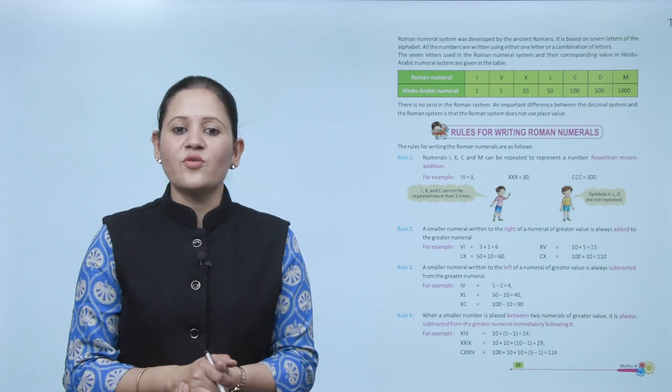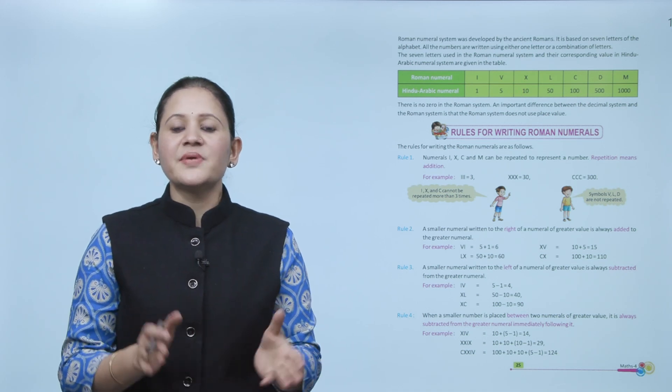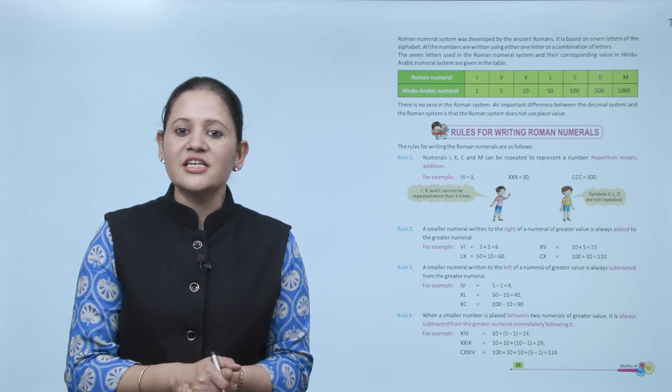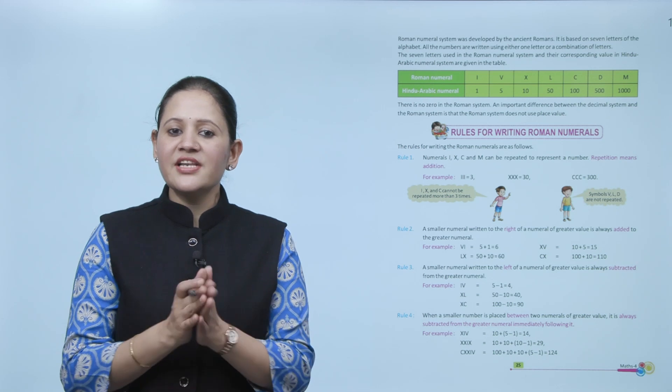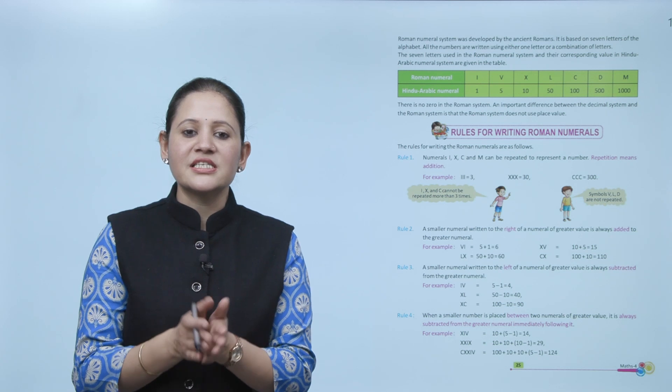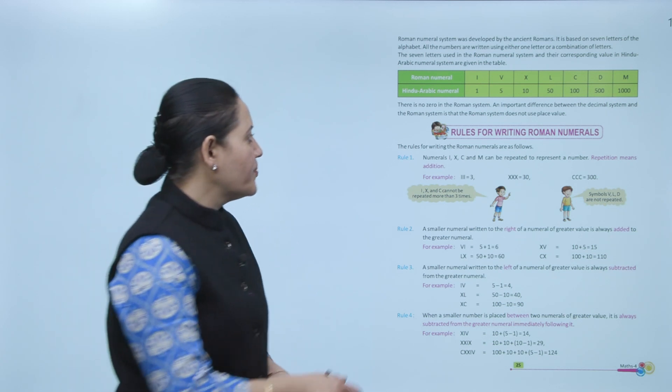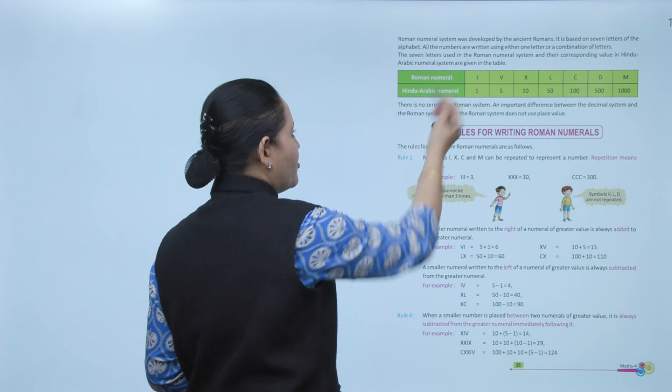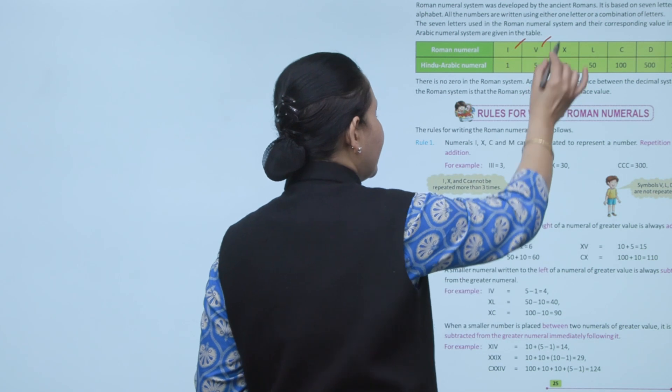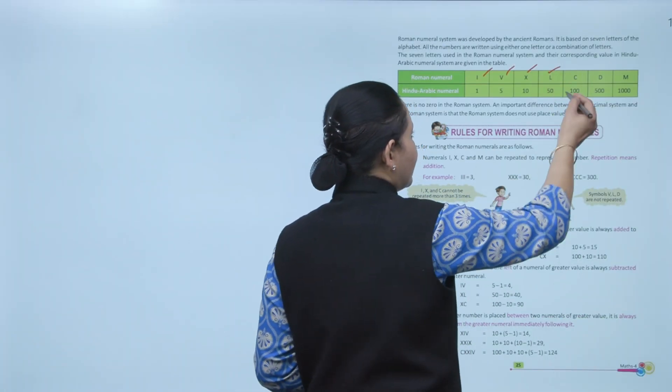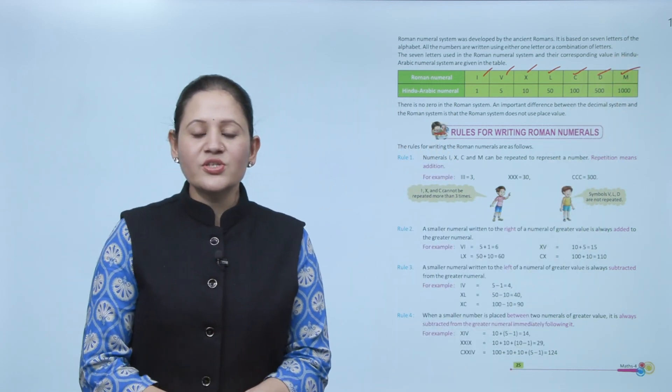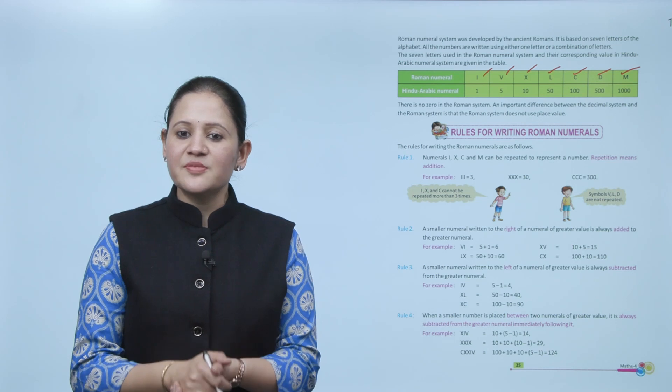The Roman numeral system was developed by the ancient Romans. It is based on seven letters of the alphabet. All numbers are written using one letter or a combination of letters. The seven letters used in Roman numeral system and their corresponding values in Hindu-Arabic numeral system are given in the table. In Hindu-Arabic, 1 in Roman numeral is written as I, 5 as V, 10 as X, 50 as L, 100 as C, 500 as D, 1000 as M. There is no zero in the Roman system. An important difference between the decimal system and the Roman system is that the Roman system does not use place value.